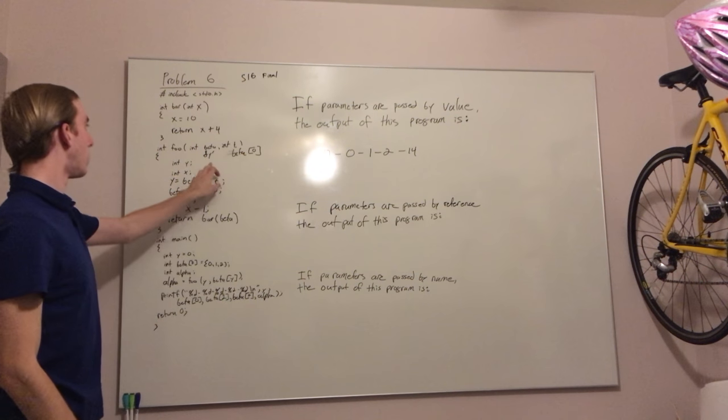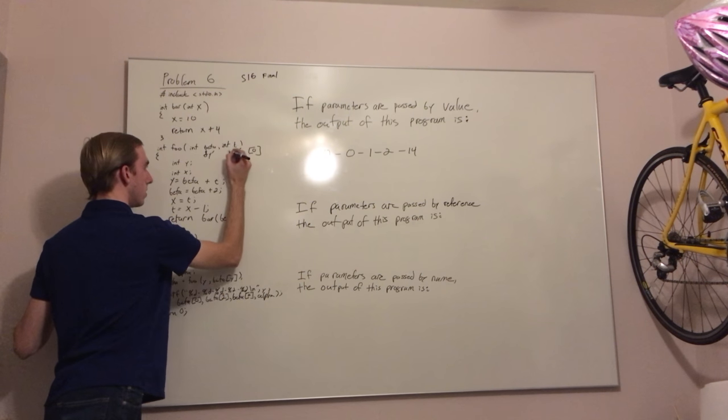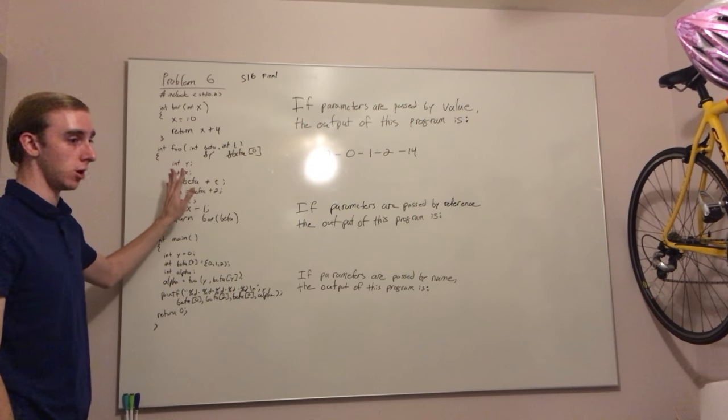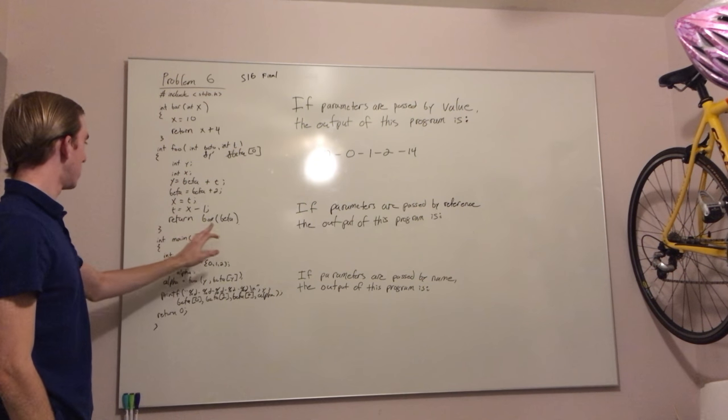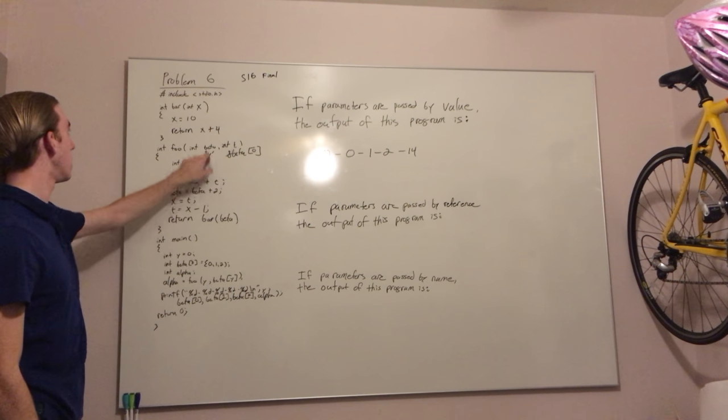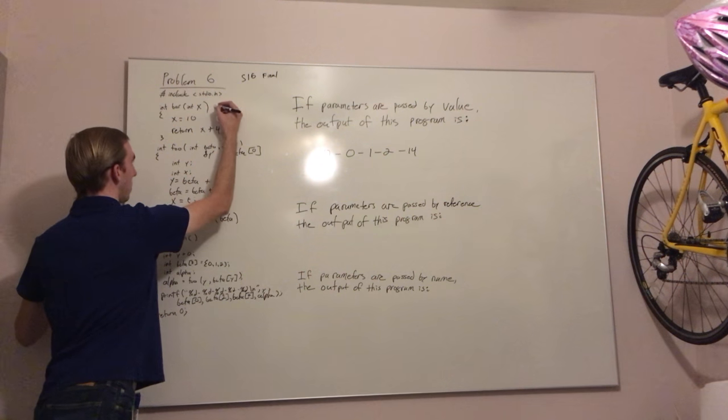We are calling this y prime because there already exists local variable y and we want to avoid confusion. Since we are calling bar on beta and beta is the address of y, x also becomes the address of y.